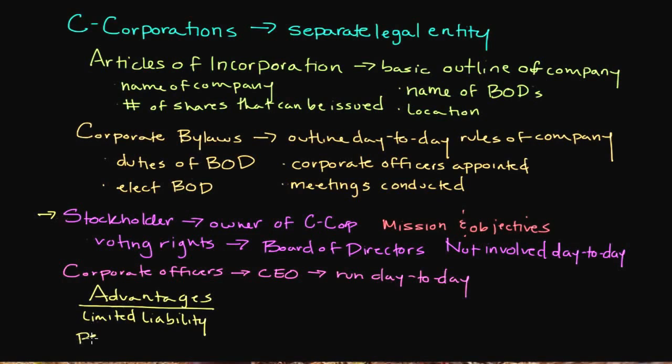Another benefit is what we call permanence. Because the owners are stockholders holding shares of ownership, if any single person were to pass away, that doesn't affect the extent to which the business continues to operate. The business will continue to run despite one of the owners unfortunately passing away. Whereas with a sole proprietorship or partnership, because the business and the owner are the same for all intents and purposes, that creates issues around whether the business is going to continue to operate and if so, how.